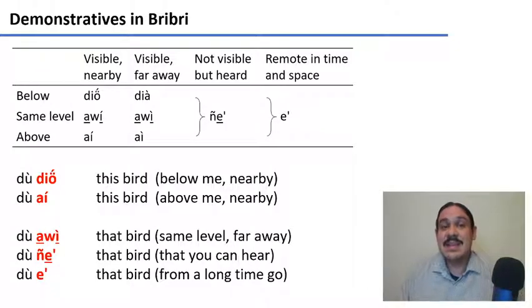So as you can see, languages can split the space around you in many different ways. It can be a very basic subdivision like English, where you have near and far, or it can be more divisions, like in BriBri.